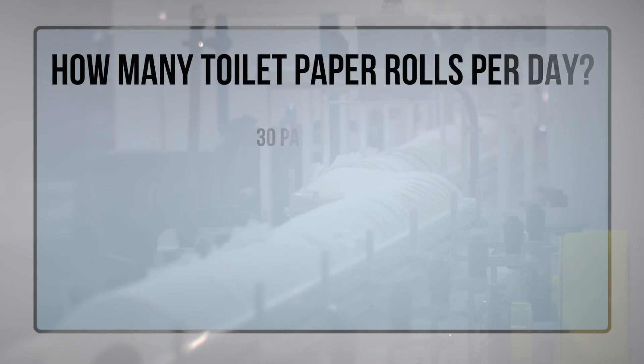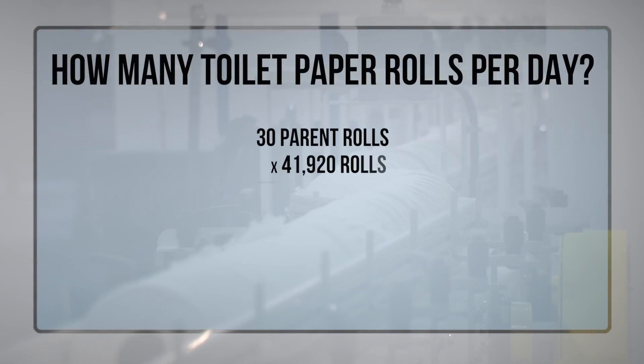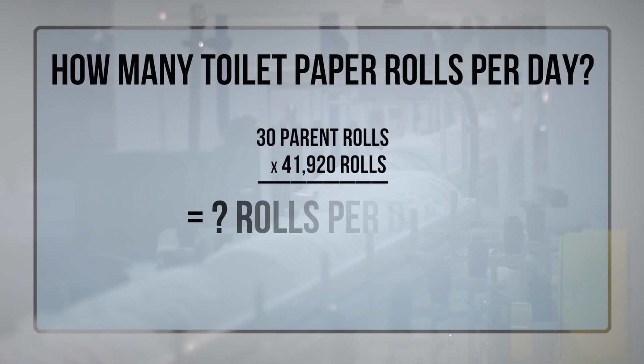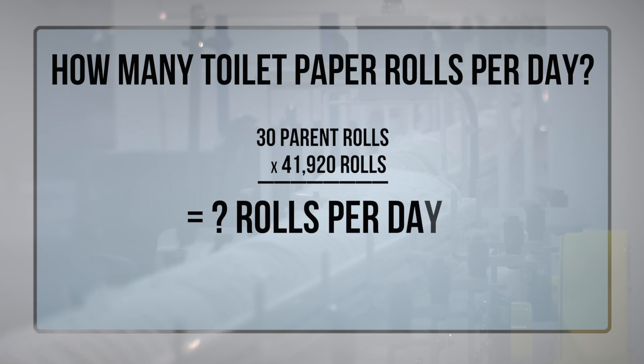If this paper machine can make 30 parent rolls each day, and each parent roll makes 41,920 toilet paper rolls, how many toilet paper rolls can you make in one day?